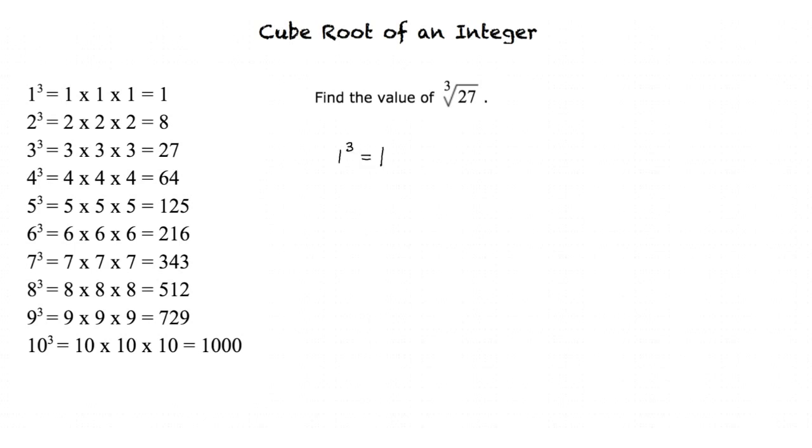We know that 1 to the third is equal to 1 and 5 to the third is equal to 125. So since 27 is between 1 and 125, we know the answer will be between 1 and 5. Now, since 27 is closer to 1 than it is to 125, let's start by working our way upwards. 2 times 2 times 2 is equal to 8, which is too low, so we keep on going. 3 times 3 times 3 is equal to 27. So our final answer is 3.